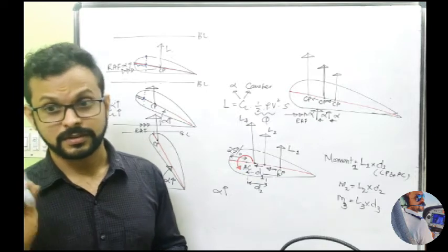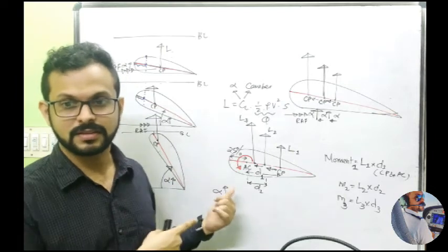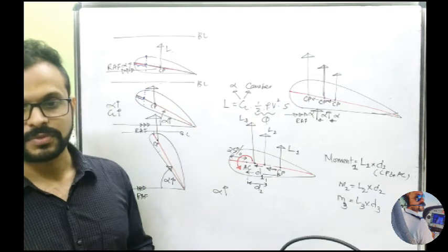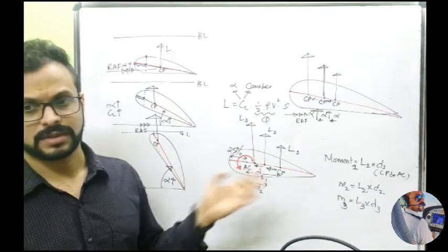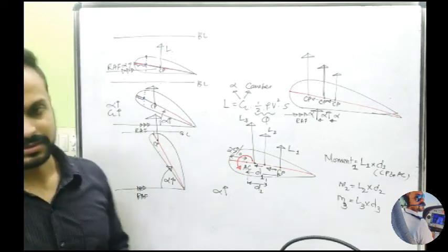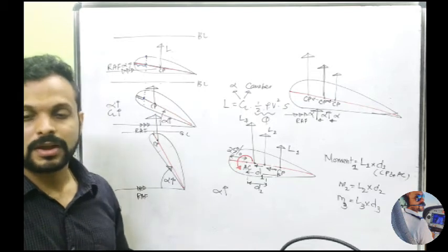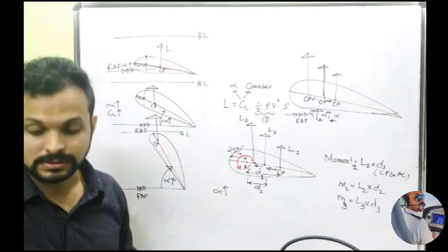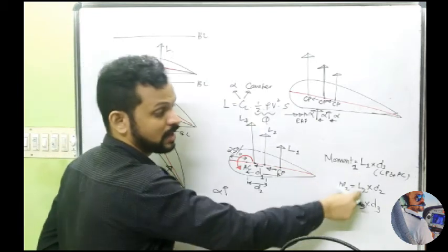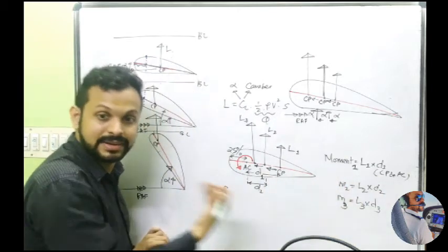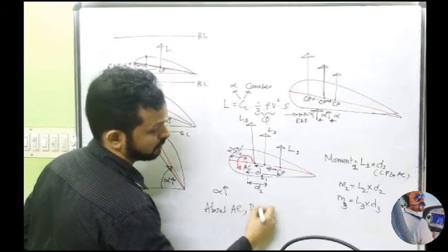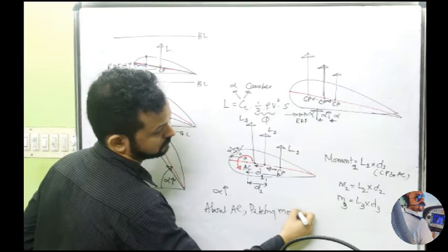Do you understand? There is a question in the notes which explains this — definitions and everything. Aerodynamic center is an assumed point on the wing where the net change in moment is zero. Not that the net moment is zero — the moment value is still there — but the change in moment is zero. M1 to M2, change is zero. M2 to M3, change is zero. Because even though L1, L2, L3 are increasing, d1, d2, d3 are progressively decreasing, so the net product — the moment — remains the same. About the aerodynamic center, the pitching moment is constant.